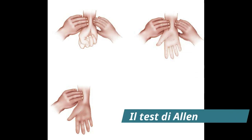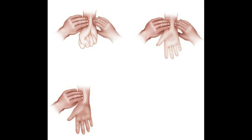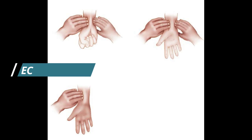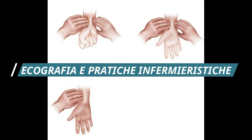Il test di Allen veniva eseguito per dimostrare la pervietà delle arterie radiale e ulnare, al fine di evitare ischemia alla mano in caso di ostruzione dell'arteria radiale in seguito alla puntura arteriosa. Più studi hanno evidenziato una bassa specificità e sensibilità del test. Pertanto, il suo utilizzo sistematico è sconsigliato a fronte di strategie di indagini alternative come l'ecografia Doppler.